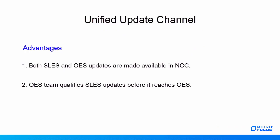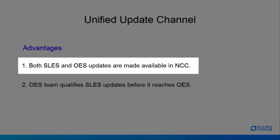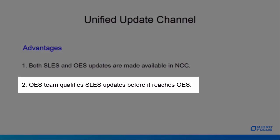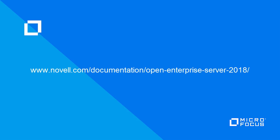Let's see the advantages of Unified Update Channel. As discussed earlier, customers had to deal with two customer centers. With Unified Update Channel, both SLES and OES updates are made available in NCC. Additionally, SLES updates typically used to land on OES systems without proper validation from the OES QA team. With OES 2018 Unified Update Channel, all updates including SLES updates are qualified by the OES QA team before they are made available. For more information on install and deployment changes in OES 2018, refer to www.novell.com/documentation/open-enterprise-server-2018. Thanks for watching.